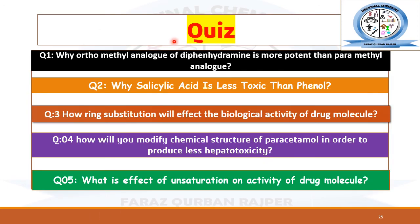Quiz for self-assessment — attempt these questions in the comment section: Question 1: Why is the ortho-methyl analog of diphenhydramine less potent than the para-methyl analog? Question 2: Why is salicylic acid less toxic than phenol? Question 3: How does ring substitution affect the biological activity of a drug molecule? Question 4: How would you modify the chemical structure of paracetamol to produce less hepatotoxicity? Question 5: What is the effect of unsaturation on the activity of a drug molecule?